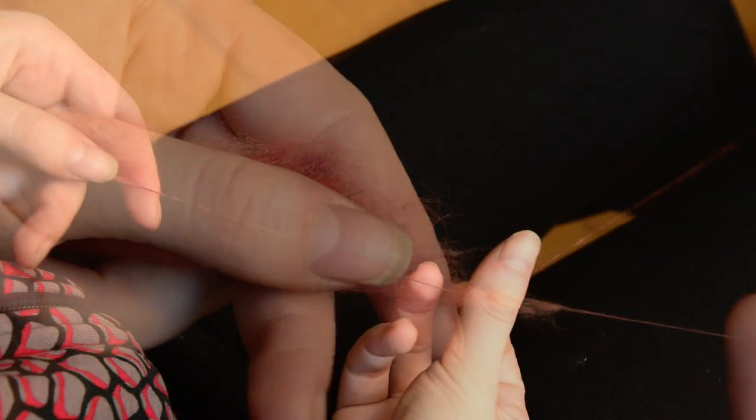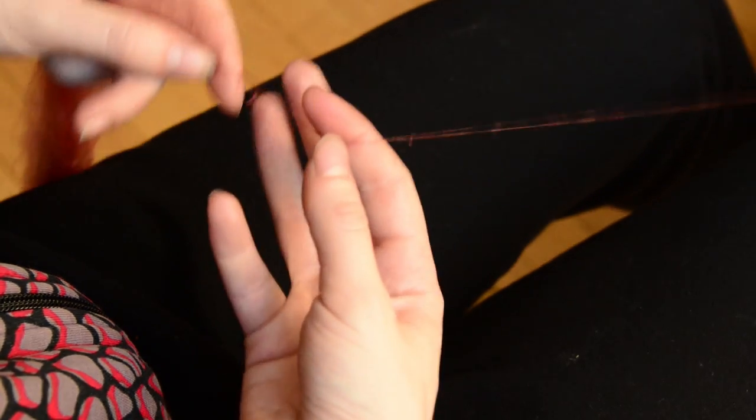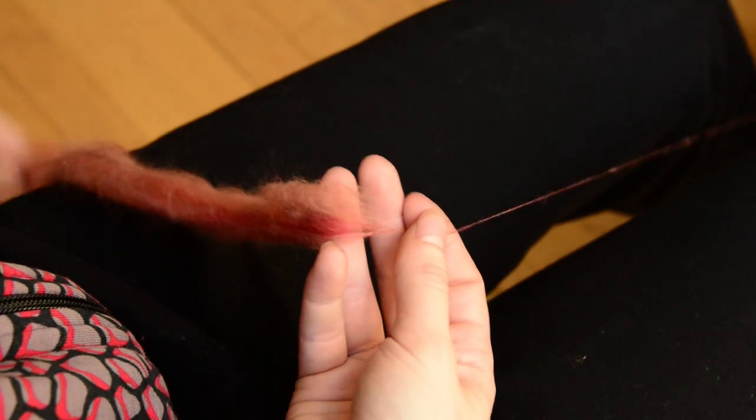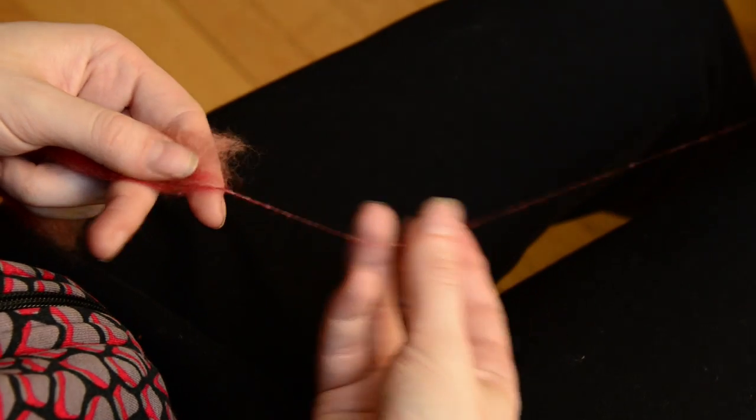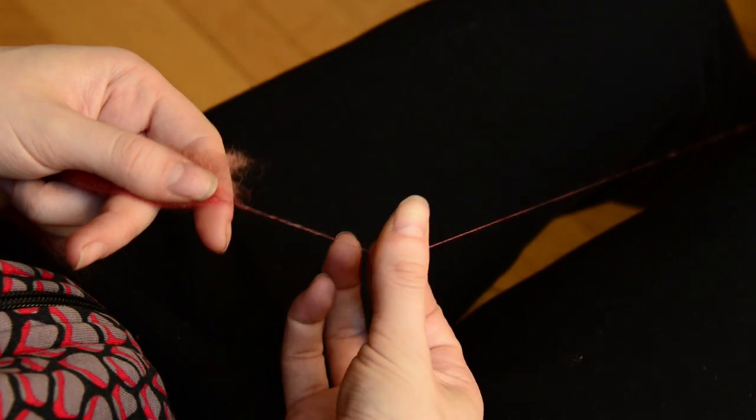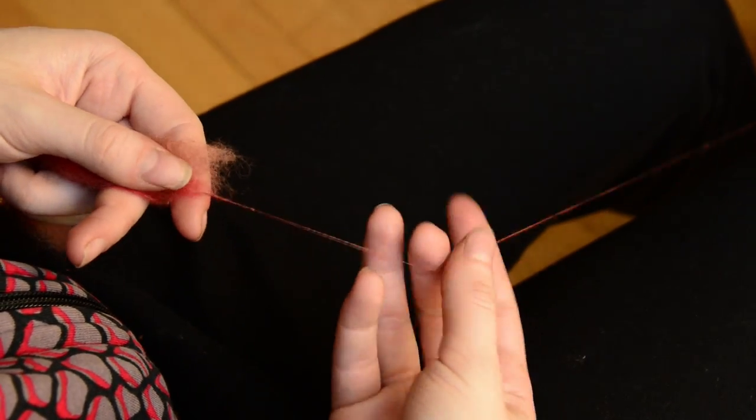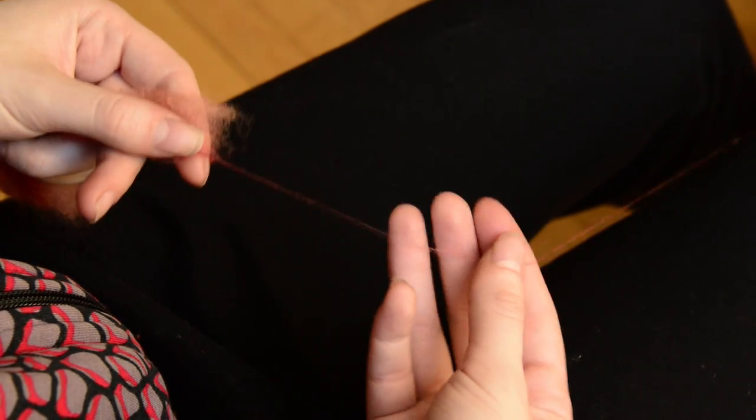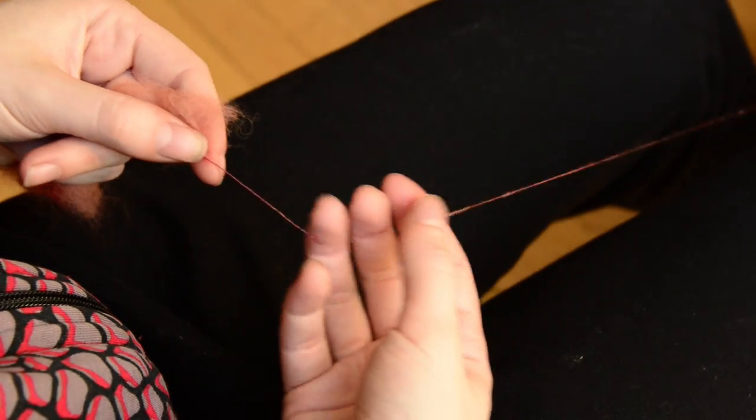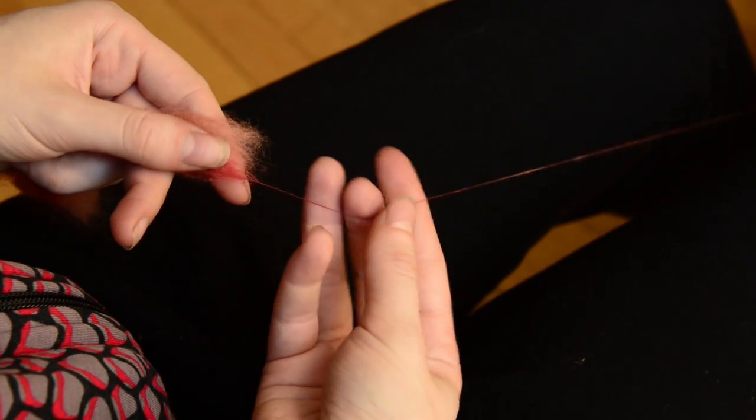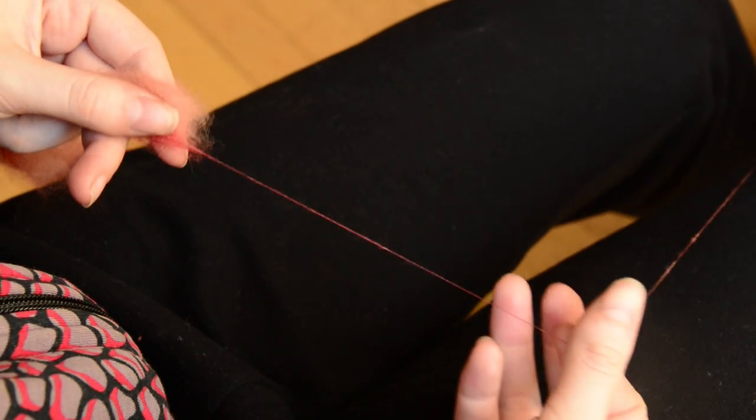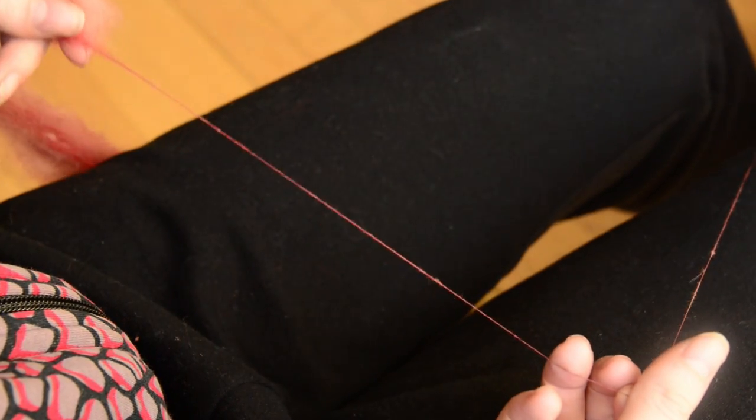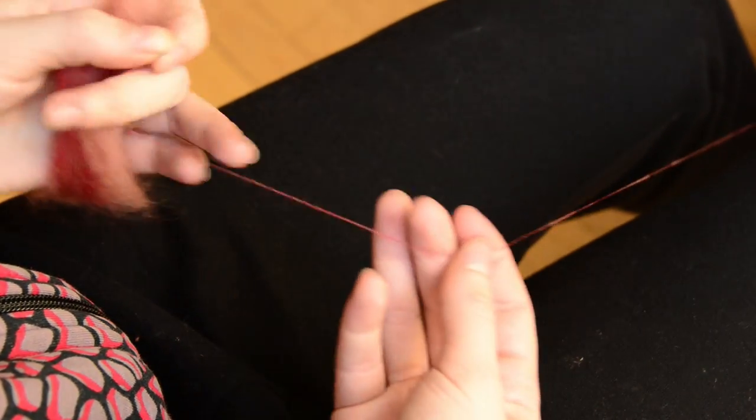So the technique I'm using right now is somewhere between a long and a short draw. You'll notice that I'm not really smoothing the fibers out with my right hand as I go, but I'm also not drafting all the way out with my left hand because I find that with super fine yarns you tend to lose control and break the fiber more, at least at my skill level.